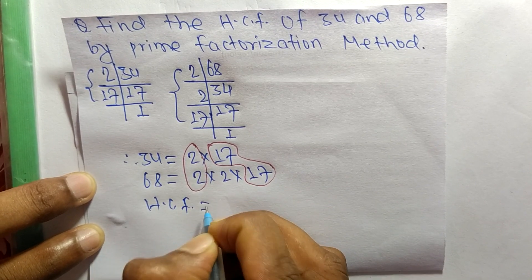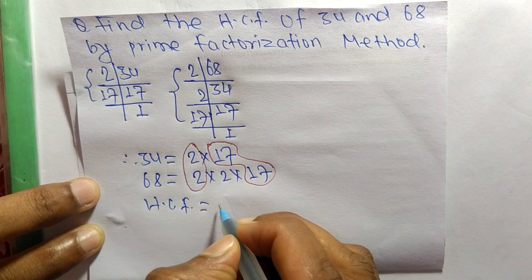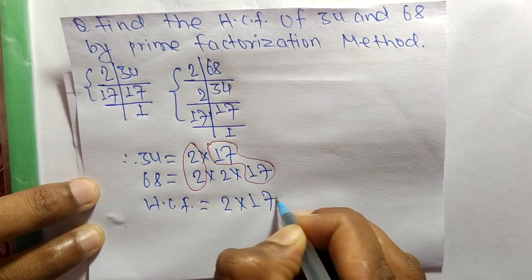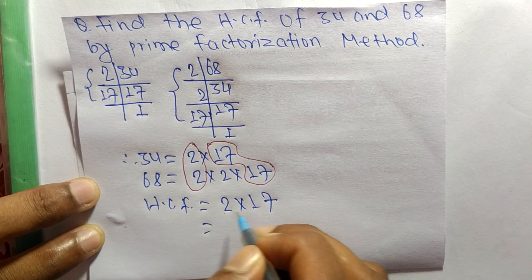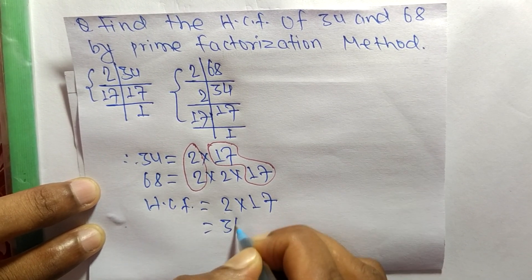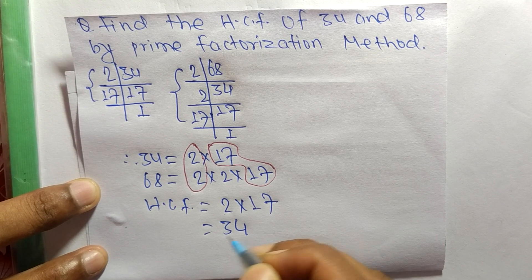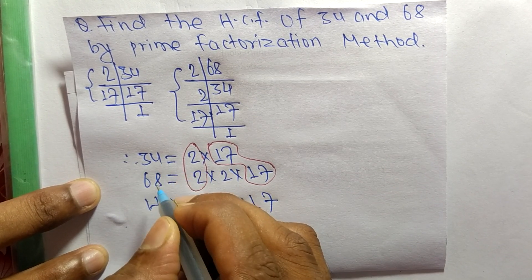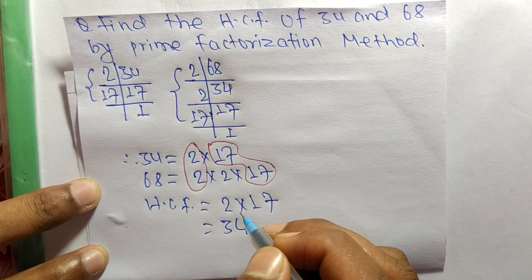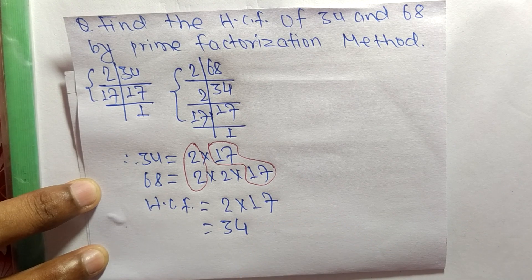HCF is equal to the common part, which is 2 and 17. So 2 times 17 equals 34. Therefore, 34 is the HCF of 34 and 68. So this much for today and thanks for watching.